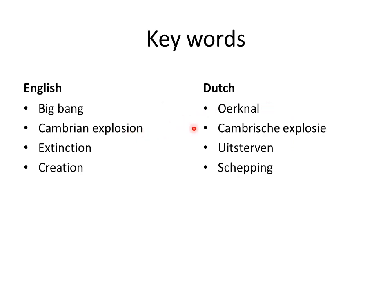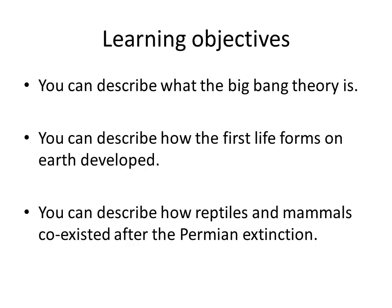Big Bang means Oerknal, Cambrian explosion means Cambrische explosie, extinction is uitsterven, and creation is schepping. The learning objectives for this chapter are that you can describe what the Big Bang Theory is, how the first life forms on Earth developed, and how reptiles and mammals coexisted after the Permian extinction.